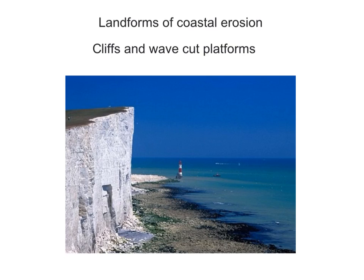Here we're going to learn about landforms of coastal erosion, particularly cliffs and wave-cut platforms. It's worth noting that the wave-cut platform below the cliff can only form when the cliff is of a relatively hard geology, namely limestone, chalk, or granite.